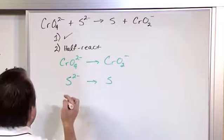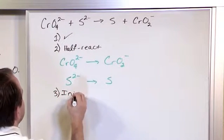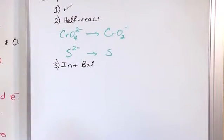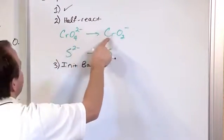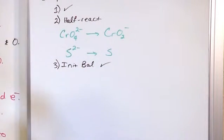Then let's go to step three, which is balancing. I'm going to call it the initial balance. That means balancing everything except for hydrogen and oxygen. What we have is chromium and chromium is balanced. Sulfur and sulfur is balanced. So I'm just going to check mark that. There's no reason to write it again if I'm not making any changes to it.